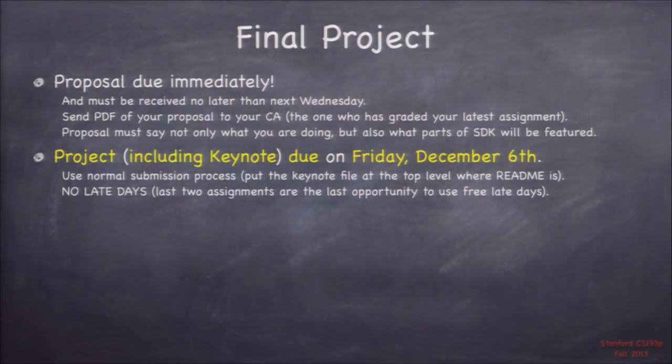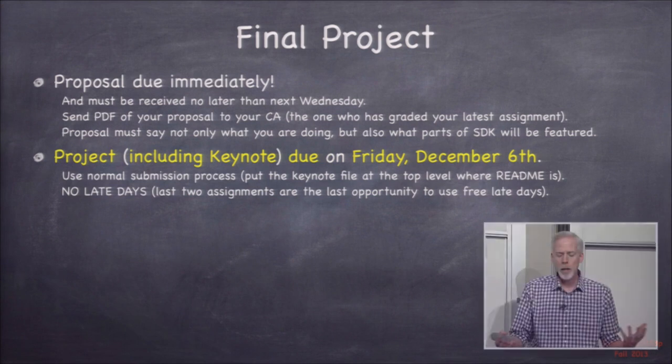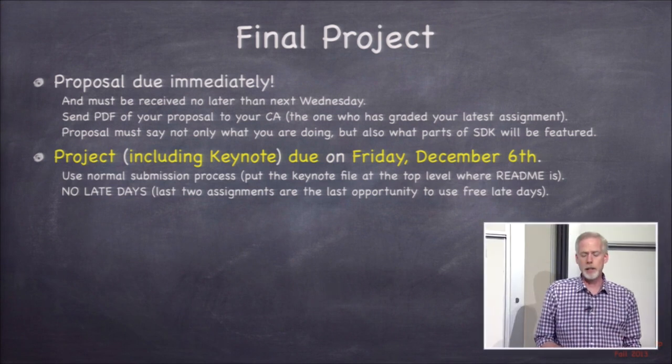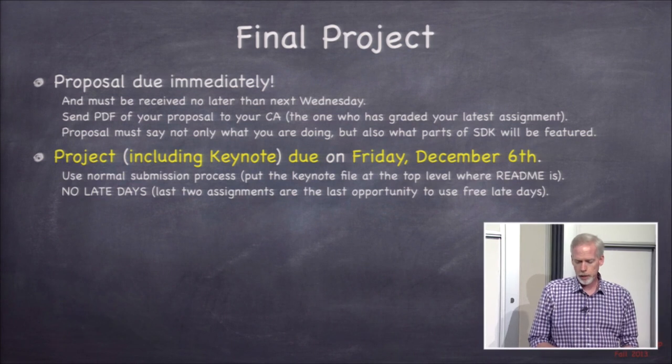Your final project has two phases. One is you have to submit a proposal to us, which we'll review — mostly just for scope, to make sure you haven't picked too big or too small a project. We're just trying to make sure you're headed in the right direction. Over the course of the final project, you can talk to us and ask questions to kind of get an idea of hitting a good target at the end.